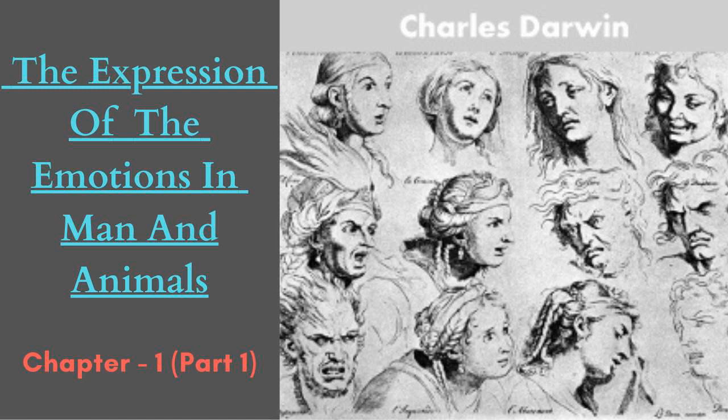That they are inherited we see with horses in certain transmitted paces such as cantering and ambling which are not natural to them, in the pointing of young pointers and the setting of young setters, in the peculiar manner of flight of certain breeds of the pigeon, etc. We have analogous cases with mankind in the inheritance of tricks or unusual gestures, to which we shall presently recur. To those who admit the gradual evolution of species, a most striking instance of the perfection with which the most difficult consensual movements can be transmitted is afforded by the humming-bird sphinx moth, Macroglosa.